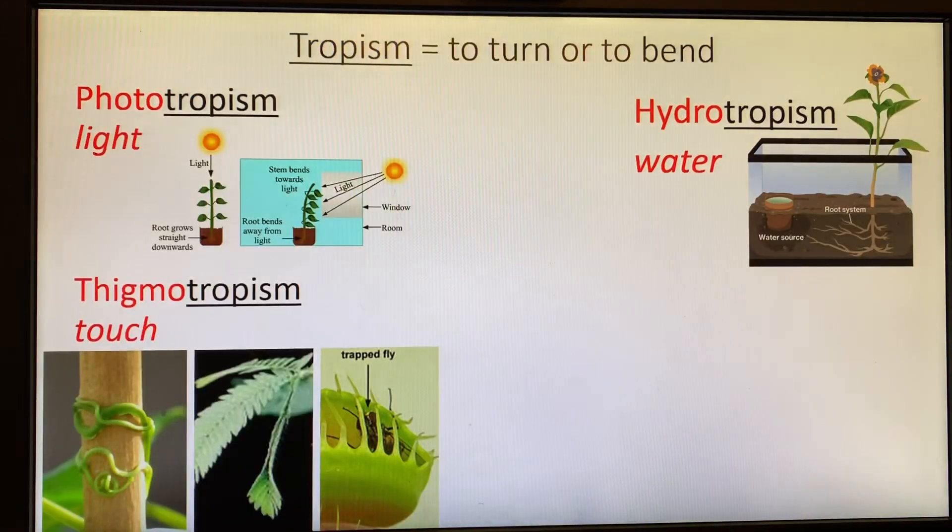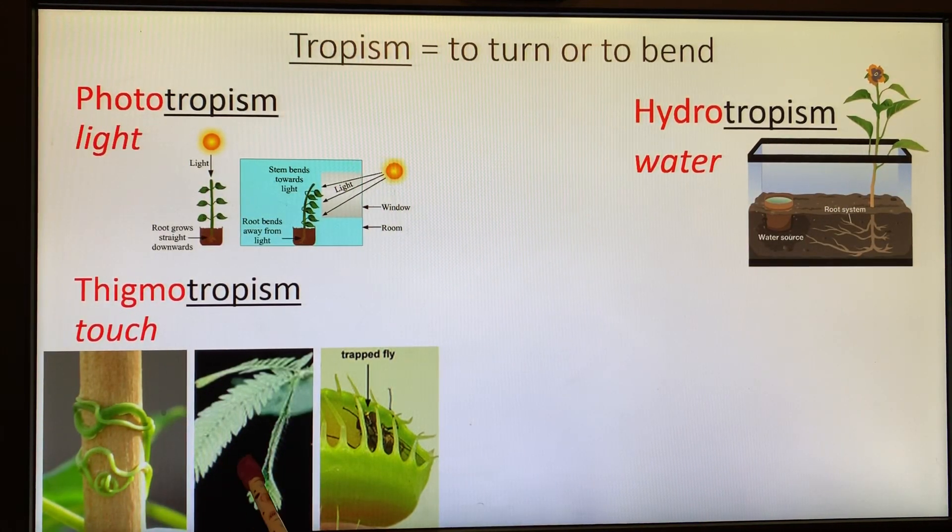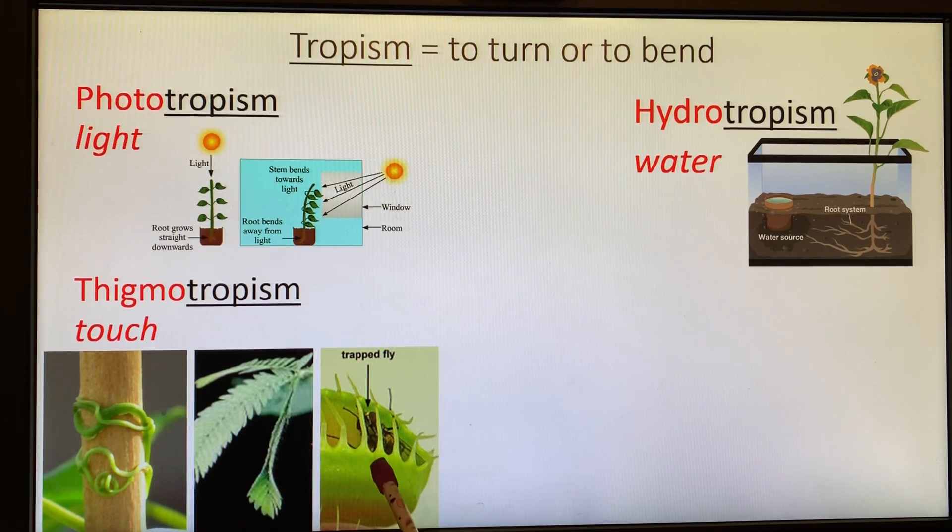Those are our three forms of thigmotropism: the vine tendrils, the mimosa plant closing up, and our carnivorous plants.